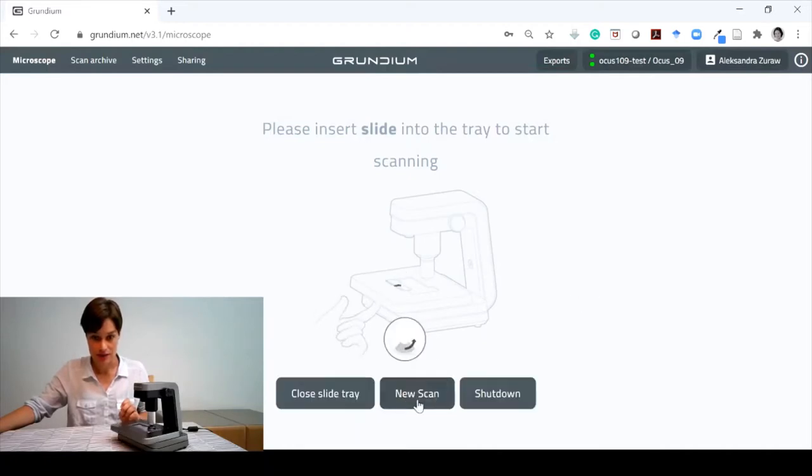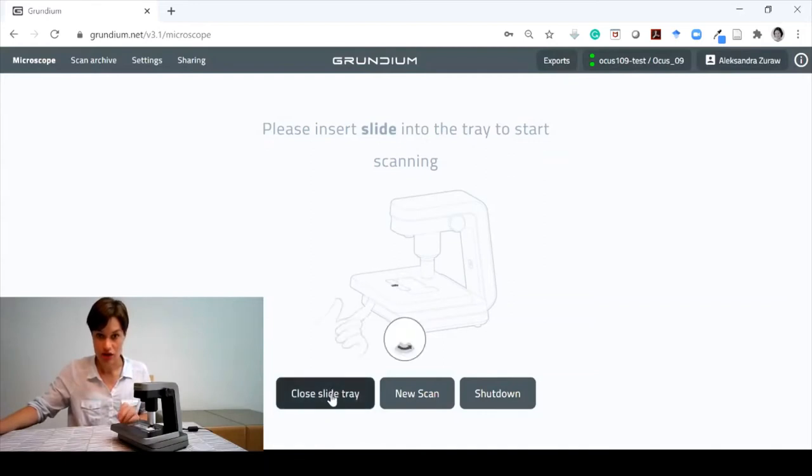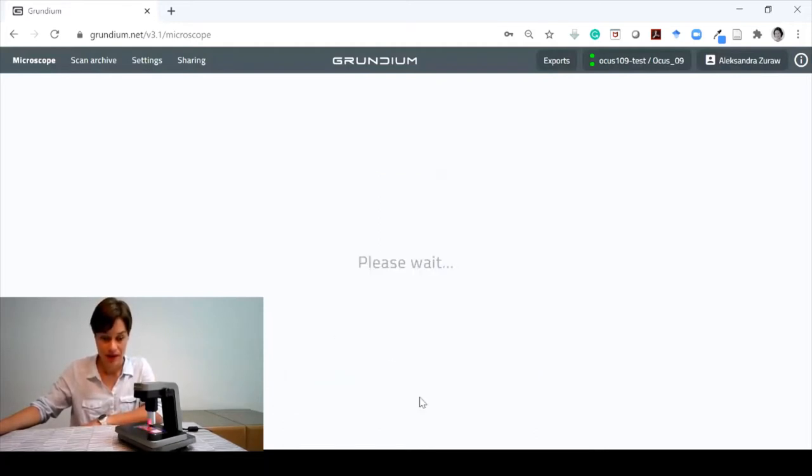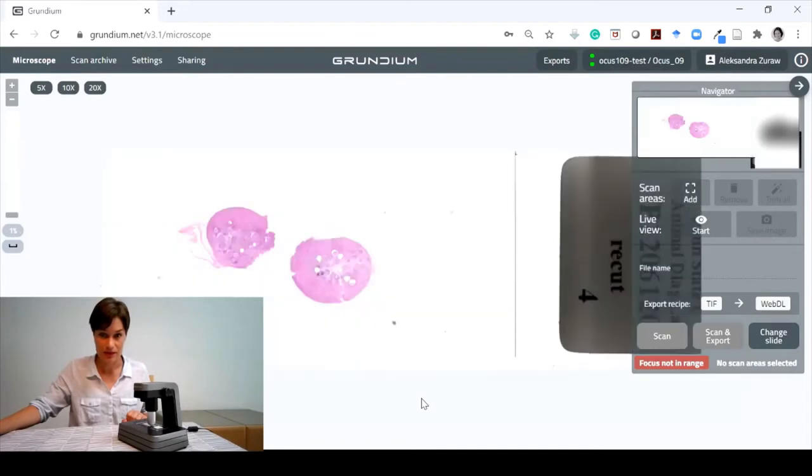I can eject the slide tray. It tells me to pull the lever below to open the slide holder. I put the slide in, close it, and I can do a new scan. I don't want to just close the slide tray, so I do a new scan. The first thing it's doing is taking an overview picture of the whole slide, and it's going to show this to us. We have here two pieces of tissue. This is an adrenal of an opossum.